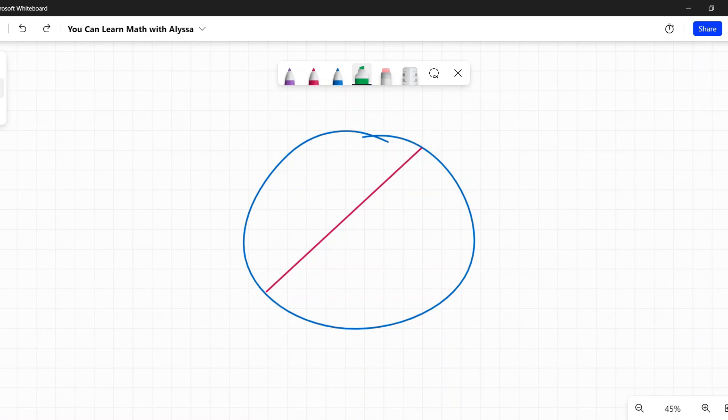So it cannot be just floating out in space, can't be like that, it has to be with both endpoints on the circle.